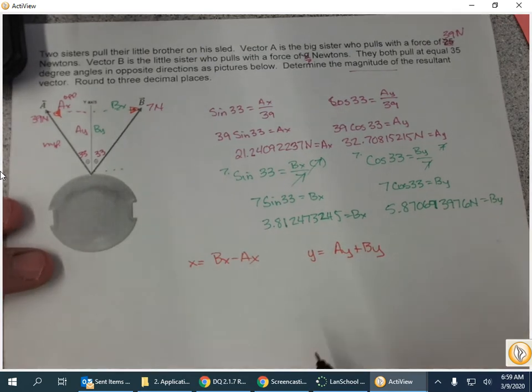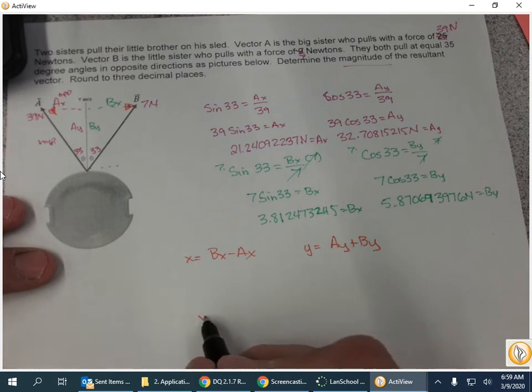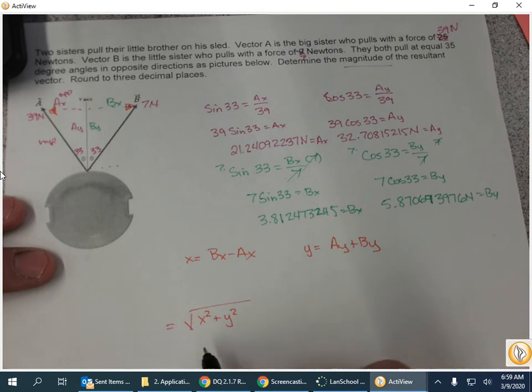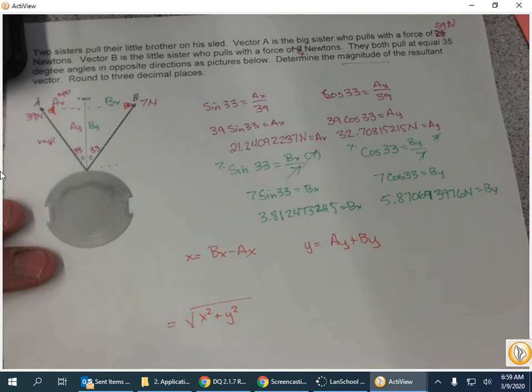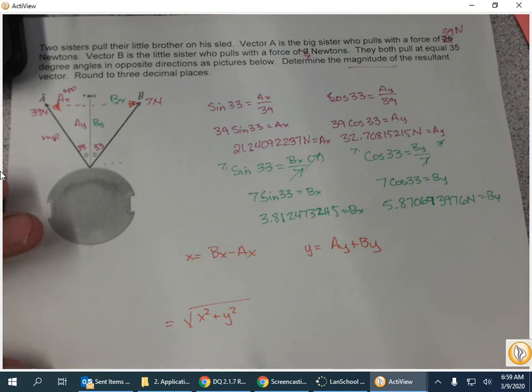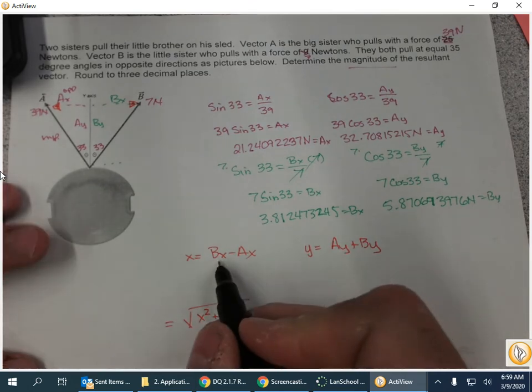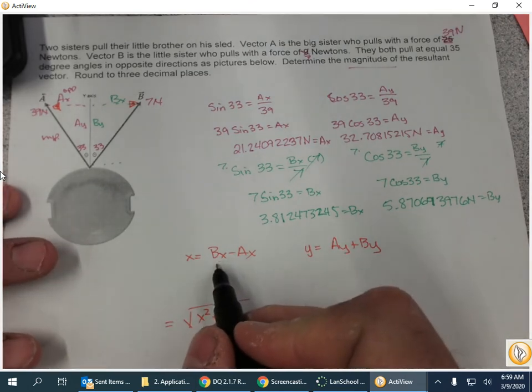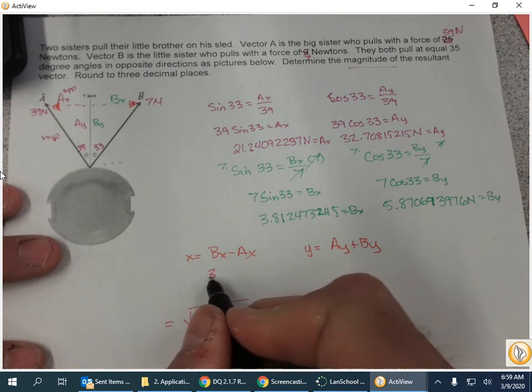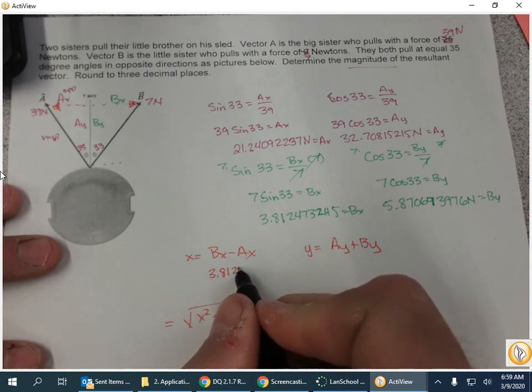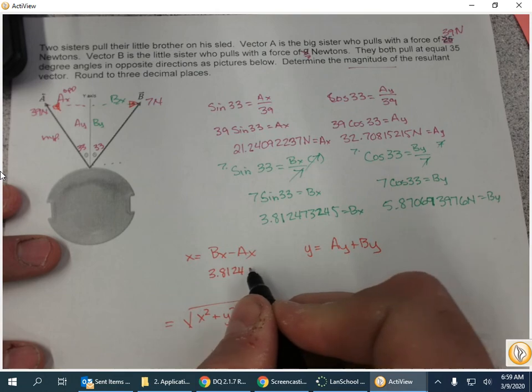And then to find the new vector, I've got to do x squared plus y squared and square root it. The Pythagorean theorem will give me the new vector's value. So let's go ahead and have at it. Bx we said was 3.8124732.